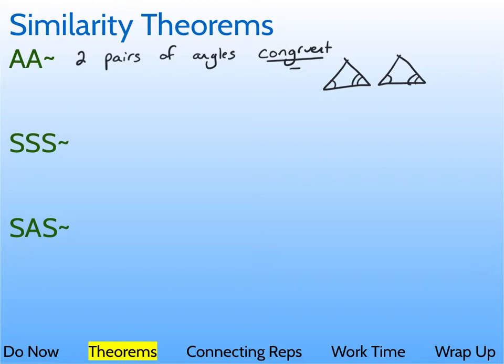Alright, side-side-side. For this one, you need three pairs of sides to be in proportion. Notice, not congruent to each other. So, it's not congruency that we're looking for. We're looking for them to be similar. So, there needs to be a scale factor between all the sides.